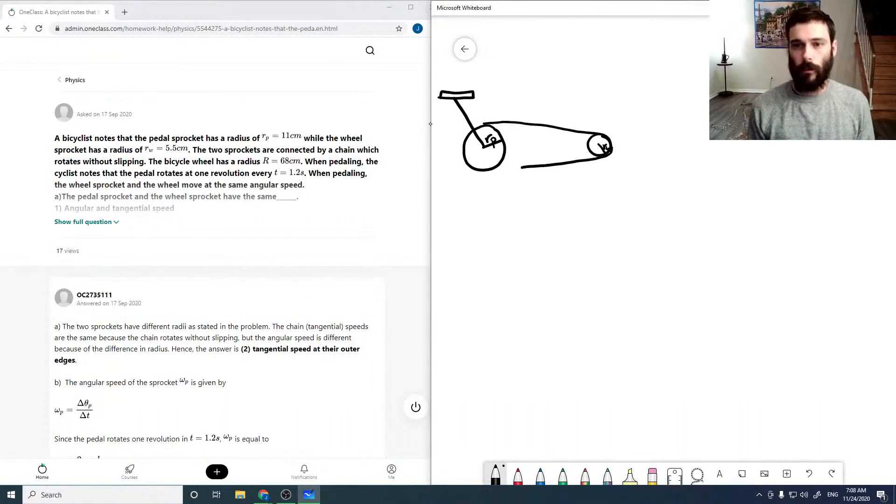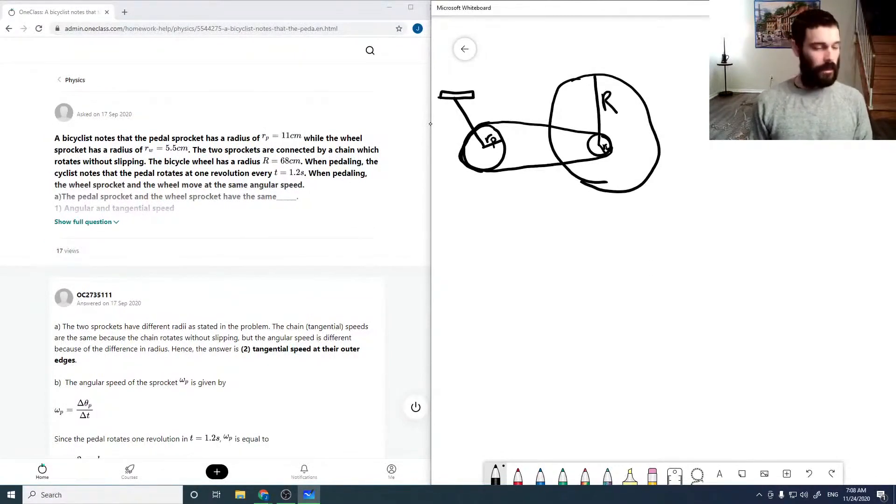The wheel sprocket is attached to an outer wheel, which is going to be just a horrible looking wheel, but it's fine. That thing would not work, but assuming that's circular, it has a radius of capital R.